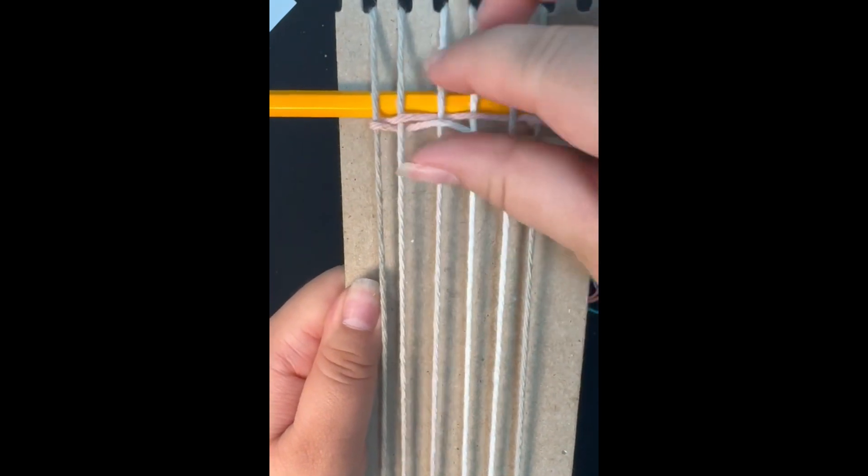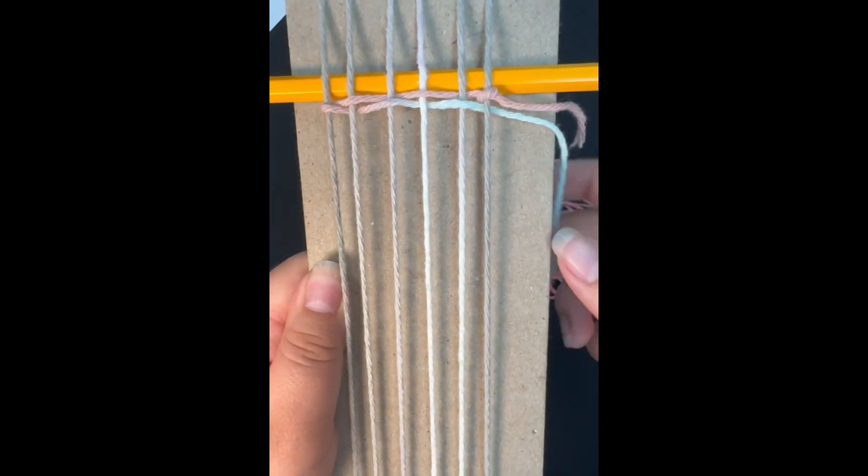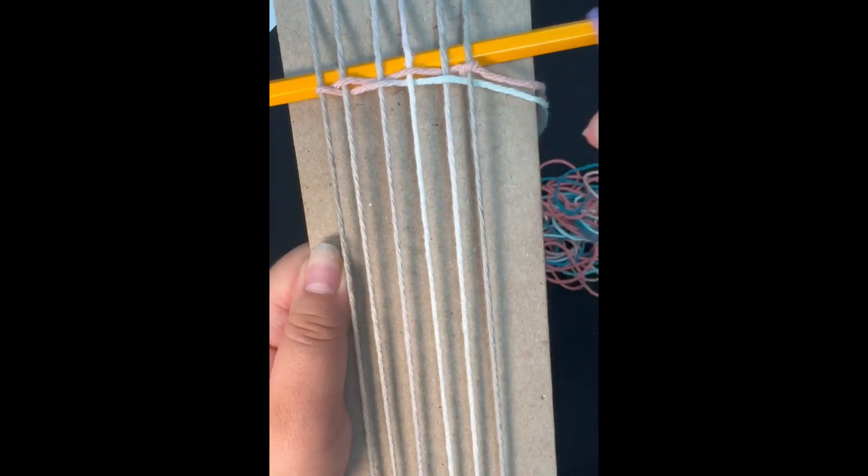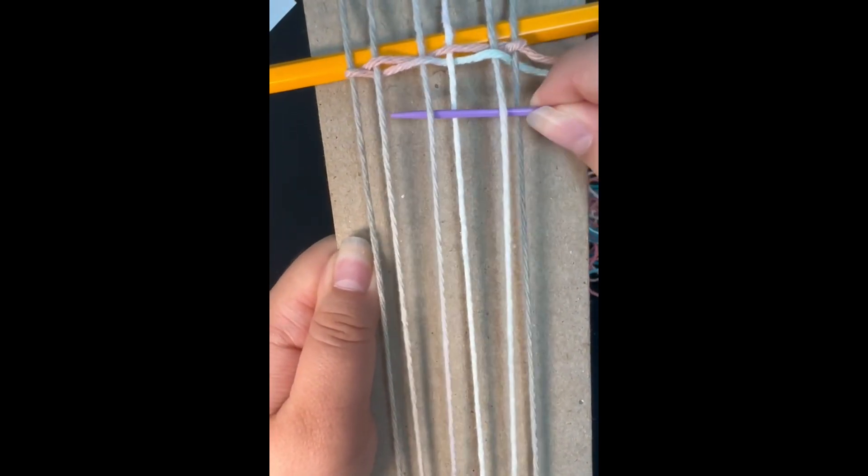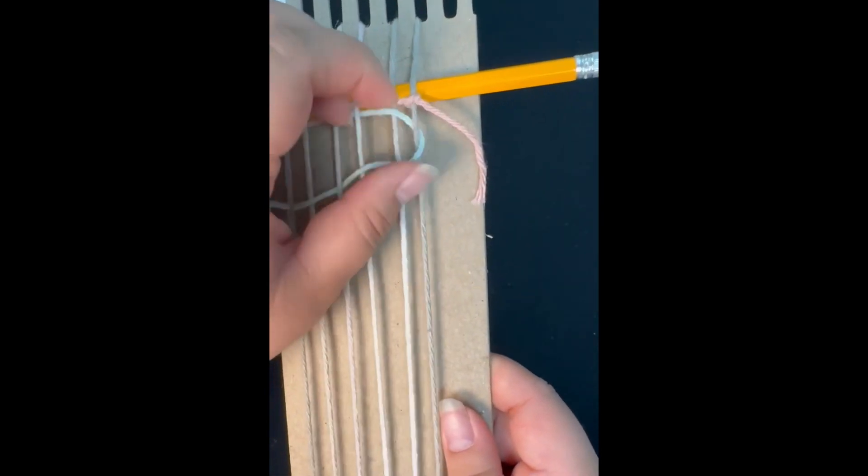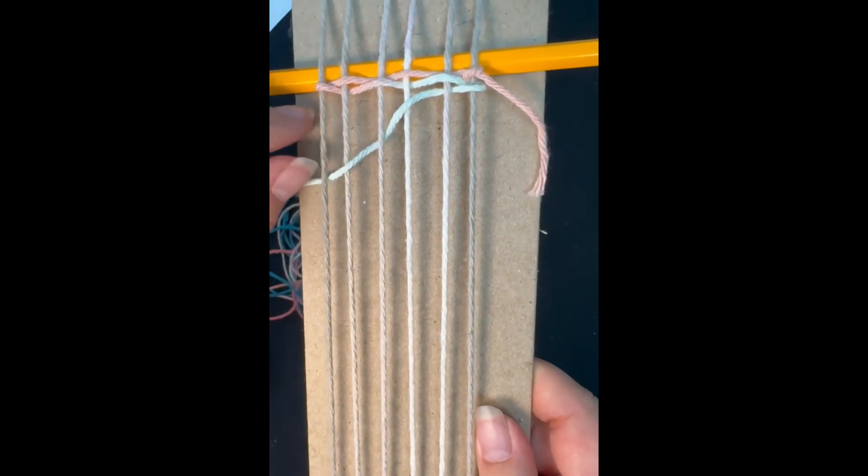There are a couple of important things to keep in mind as you keep weaving your bookmark. Make sure that you are pushing your yarn upwards to tighten it periodically. Also, make sure that you are not over-exerting your loom by pulling on the strings too much and tightening too intensely.